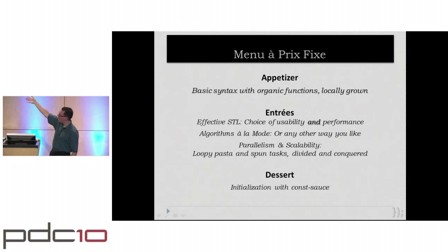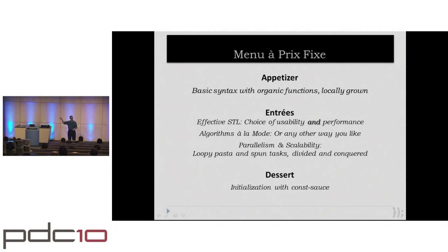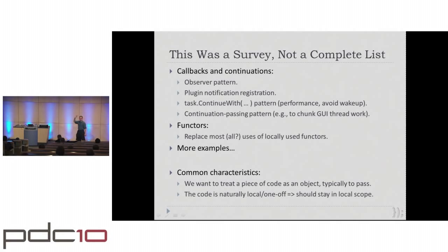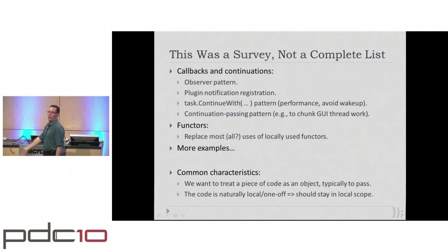This was a survey, not a complete list. It's meant to illustrate all the different domains where you can use lambdas. Here are a few more in brief: callback continuations for the observer pattern — if you have a handler to fire, give it a lambda; plugin notification registration — pass a lambda as what to do when a search happens; task continuations using TPL's ContinueWith for performance by avoiding wake-ups and context switches.